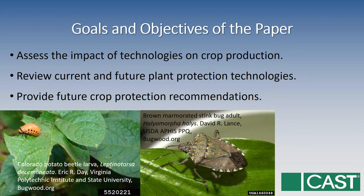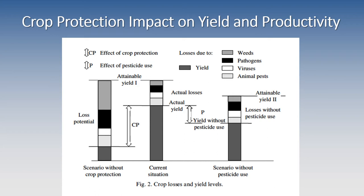The goals and objectives of the paper are to assess the impact of technologies on crop production, review current and future plant protection technologies, and provide future crop protection recommendations. Here we have a couple of pests: on the left, the Colorado Potato Beetle larva, which is native to the U.S., and on the right we have the Brown Marmorated Stink Bug, which is an introduced invasive species to the U.S.